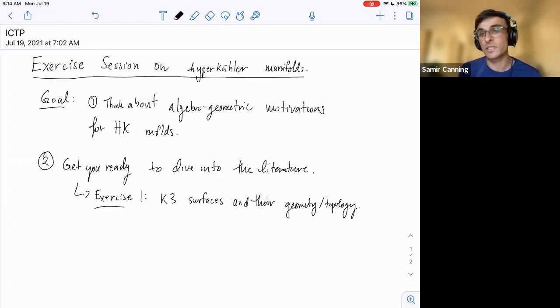And so K3 surfaces are sort of the simplest example of hyperkähler manifolds, of compact hyperkähler manifolds. And it turns out, actually this was somewhat surprising to me, but it turns out that if you just do this exercise and then you look at the further readings that I put, you will actually have all the material, like all of the background knowledge necessary to dive into this literature about topology, some Betti number calculations for hyperkähler manifolds.